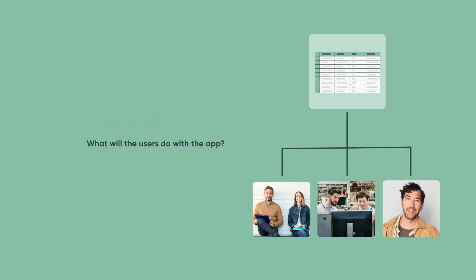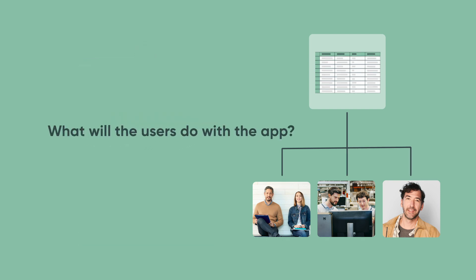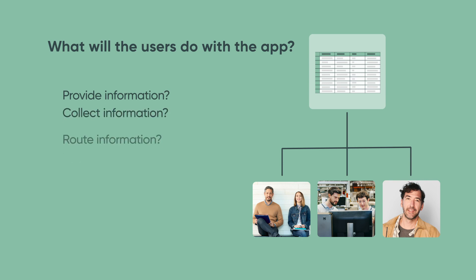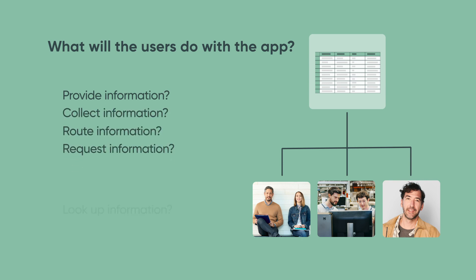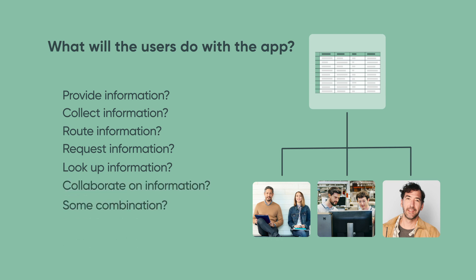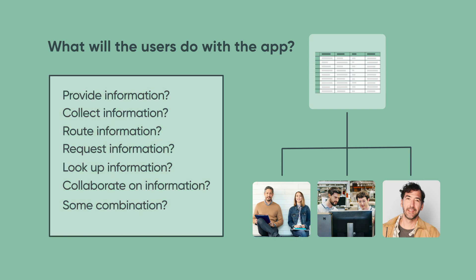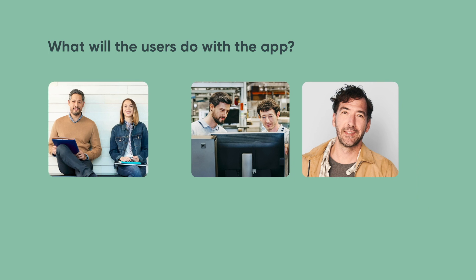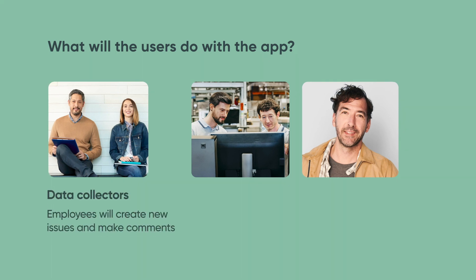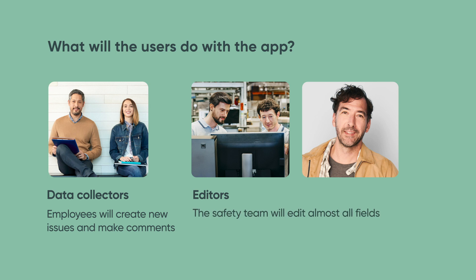Regarding use, what will the users do with the app? Will they provide information, collect information, route information, request information, look up information, collaborate on information, or some combination? Identifying these actions will establish the features and functions you'll need to build into your app. For Luke, employees are his data collectors — they'll create new issues and add comments to records, but they won't change anything related to process management. Luke and his team will edit almost all fields, including the state, due date, priority, and assignment.